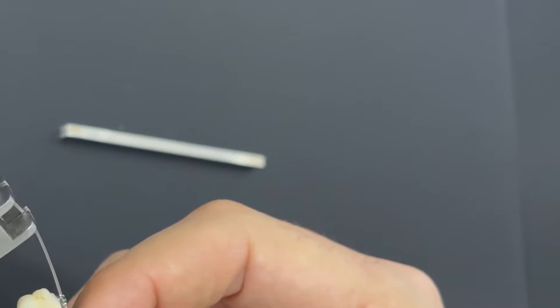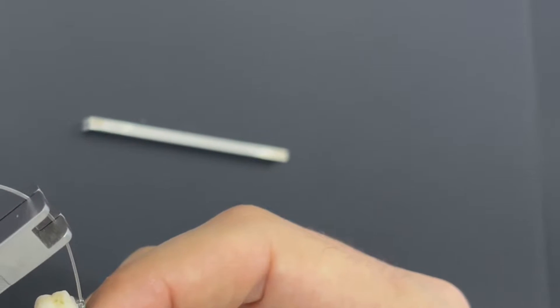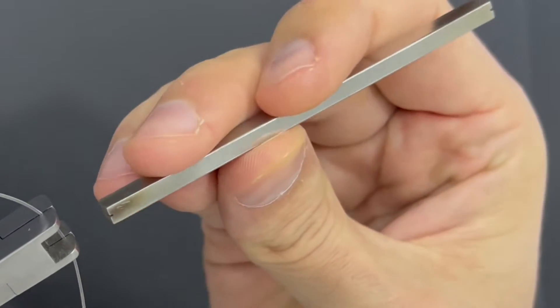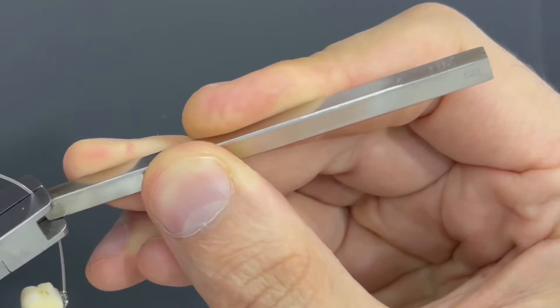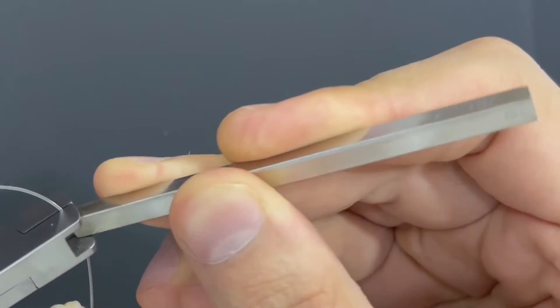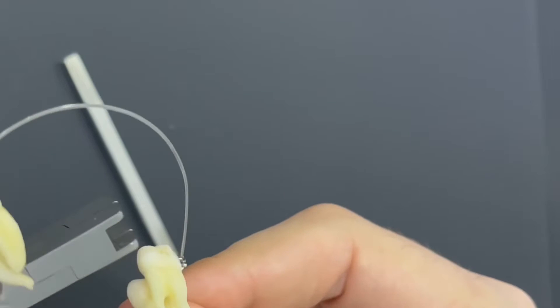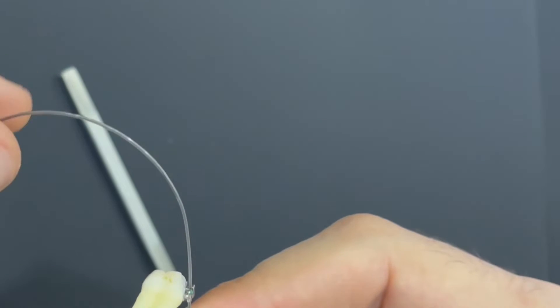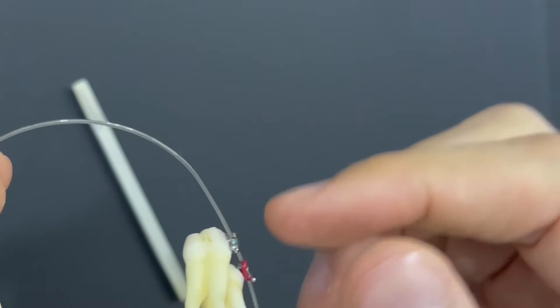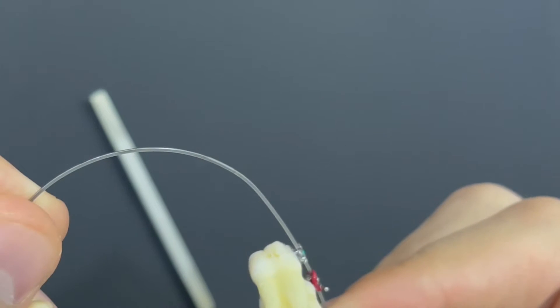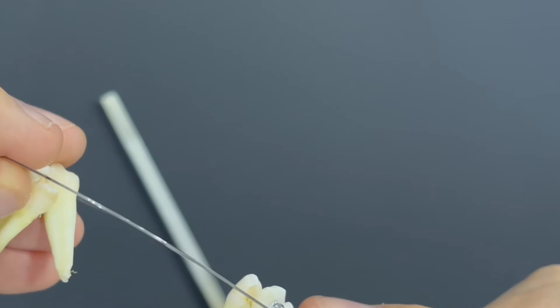Depending on the wire size, we can change the angle more or less. For example, with 16x22 stainless steel wire we can increase the angle, but with 19x25 it's not possible to make as big an angle as with 16x22.